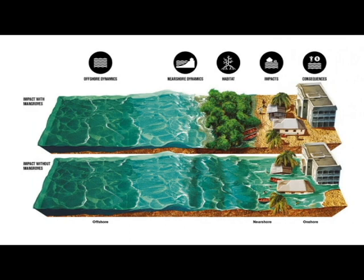Here we have an illustration. The top illustration shows a mangrove swamp just off the coast, with strong waves coming in. Because of the presence of the mangrove, the force of the waves is cut down, so the waves don't affect the coastal area. However, in the illustration below, the mangrove swamps are absent — and because they are absent, all those waves come in towards the coast, causing flooding, coastal flooding, and coastal erosion. You can see it acts as a breakwater along the coast.